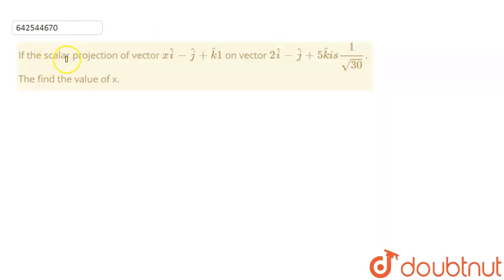Welcome to Doubtnut. So this is the question. If the scalar projection of the vector x i cap minus j cap plus k cap on vector 2 i cap minus j cap plus 5 k cap is 1 upon root 30, then find the value of x.